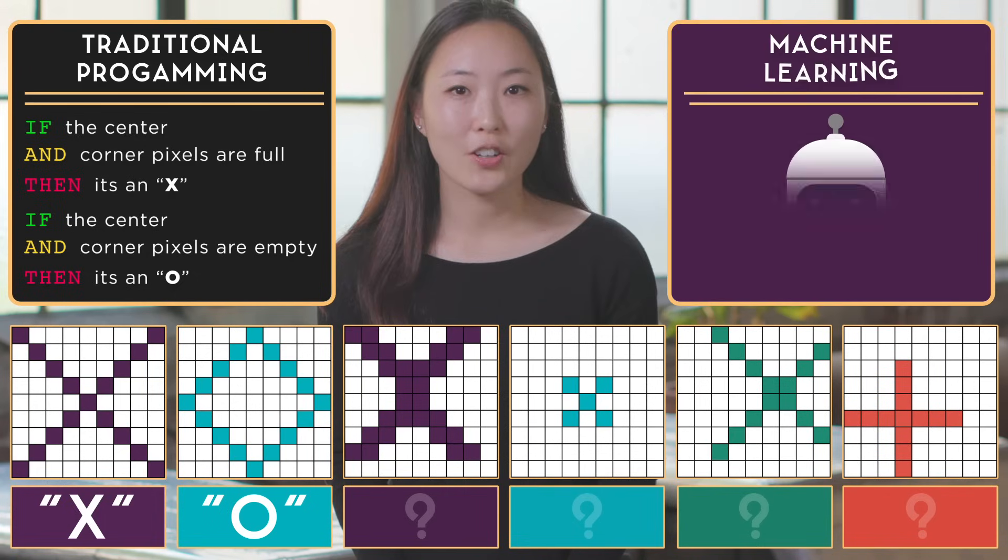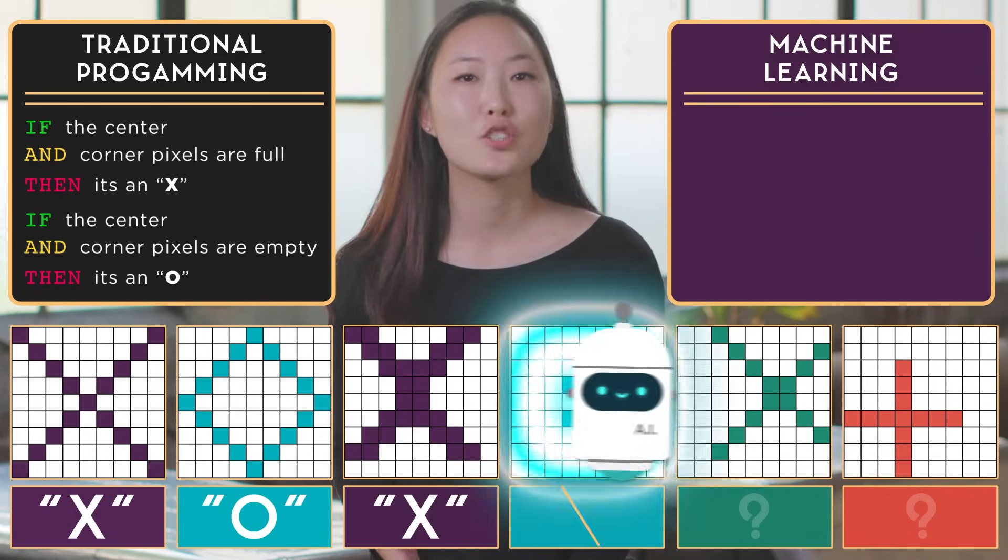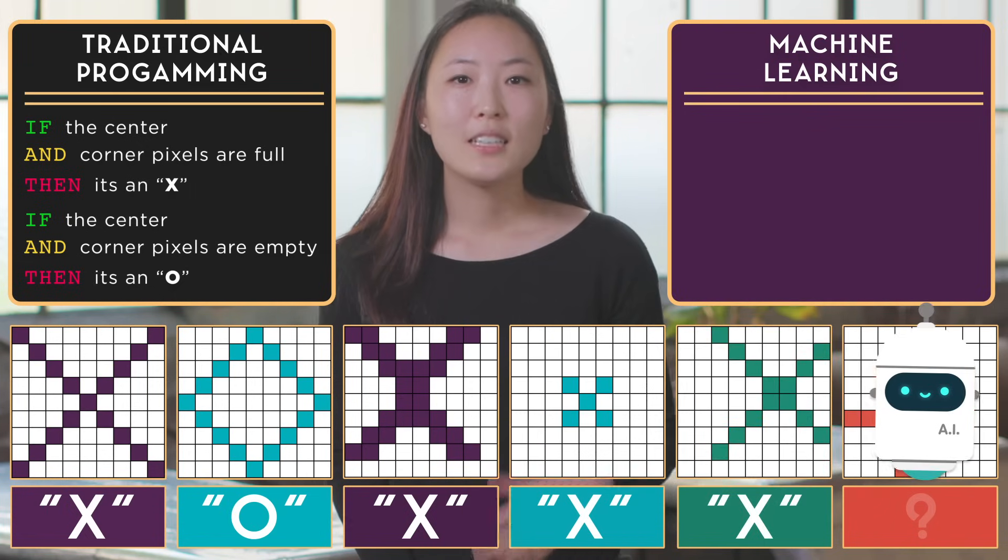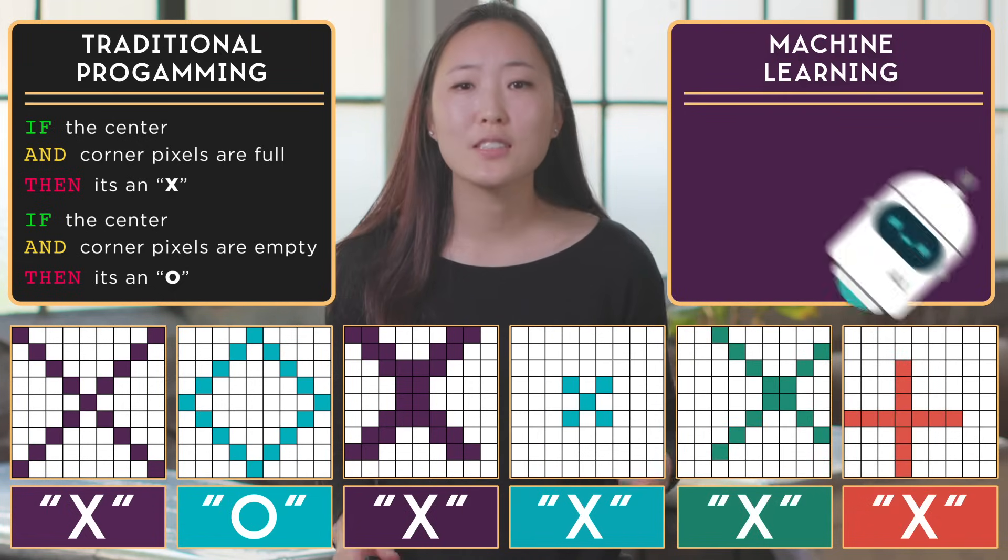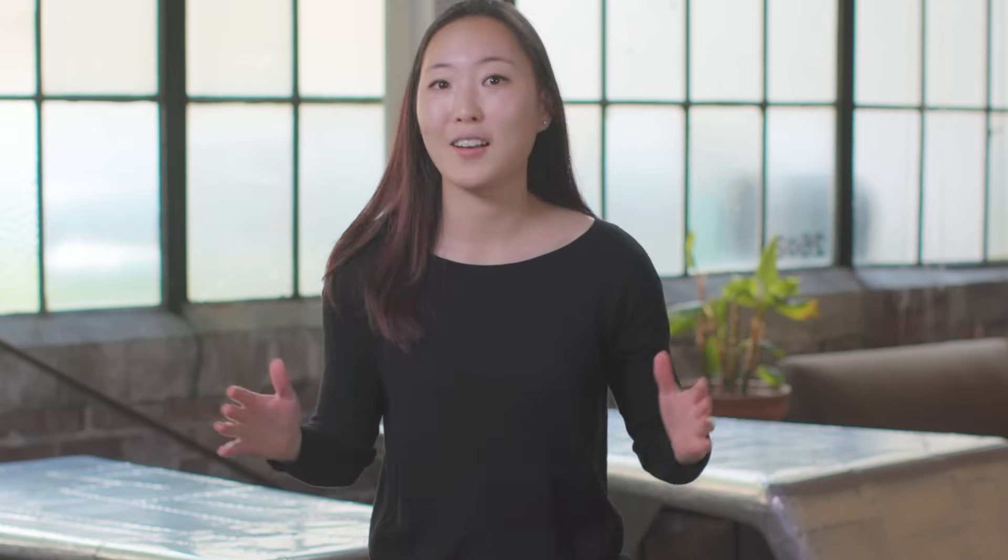But with machine learning, we can teach the computer how to recognize shapes, no matter their size, symmetry, or rotation. Teaching a computer requires thousands or even millions of examples of training data, and a whole lot of trial and error. So let's start training.